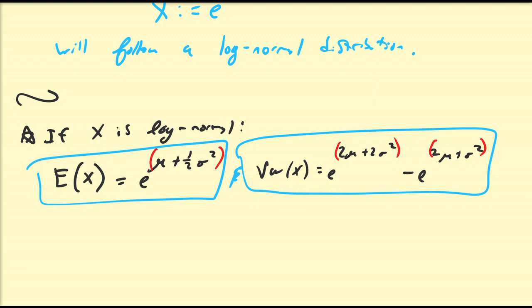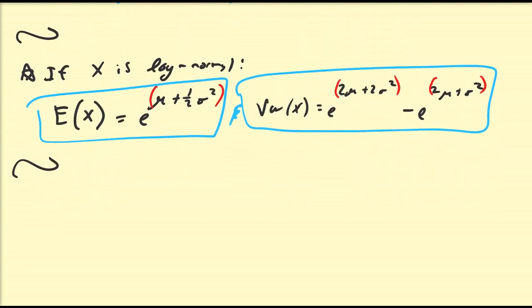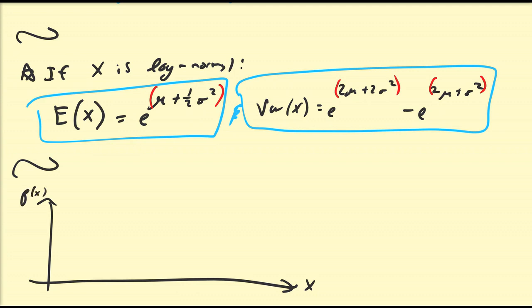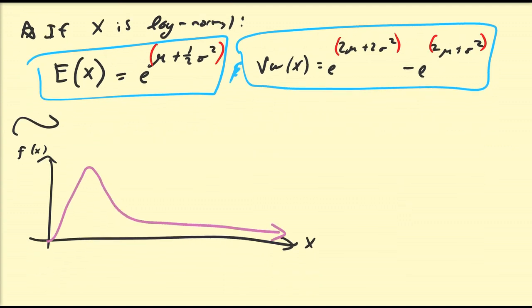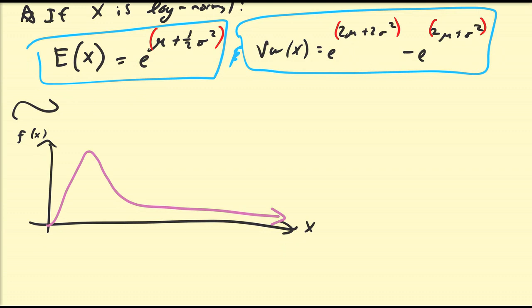Let's look at a quick sketch of the graph of a log normal distribution. Of course, x can only be a positive number since exponentials are always positive. This is going to be f of x. The graph of a log normal distribution is going to have this type of shape — it's like a decreasing curve, which looks a little bit more appropriate.